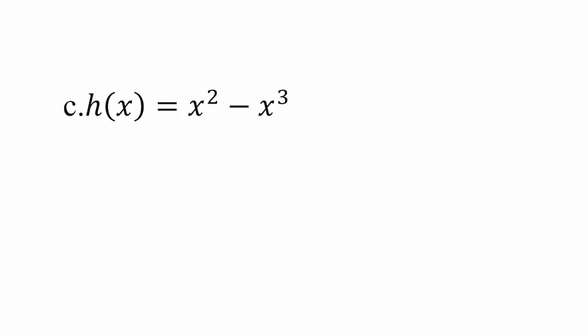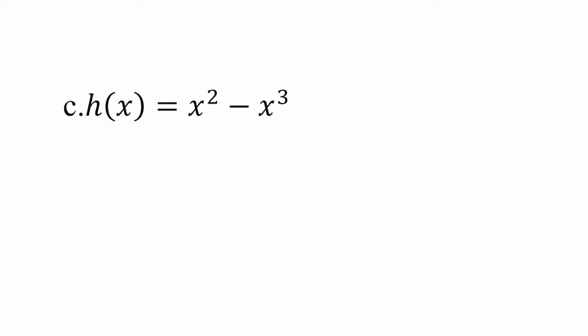Here we have a difference of two power functions: x² minus x³. Individually, each qualifies as a power function, but their difference does not — this is a polynomial function. Polynomial functions can be defined as a sum or difference of one or more power functions using non-negative whole number exponents only. No negative exponents, no fractional exponents.